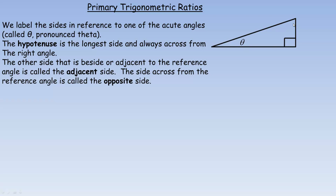I'm talking about this angle here — I could have talked about this angle here, and in some of the examples I'll put the angle up here instead of down here; it's not always going to be the one on the bottom. The hypotenuse side is the one across from the right angle; it's always the longest side in the right triangle. The other side that's right beside our reference angle is called the adjacent side — adjacent because adjacent means beside.